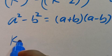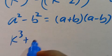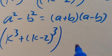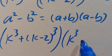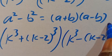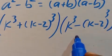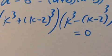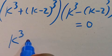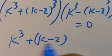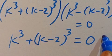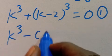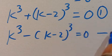Since a squared minus b squared equals a plus b multiplied by a minus b, when we apply it here we get k to the power of three plus open brackets k minus two in parentheses to the power of three, multiplied by k to the power of three minus k minus two to the power of three, equals zero. So either k cubed plus (k-2) cubed equals zero — call this case one — or k cubed minus (k-2) cubed equals zero — call this case two.